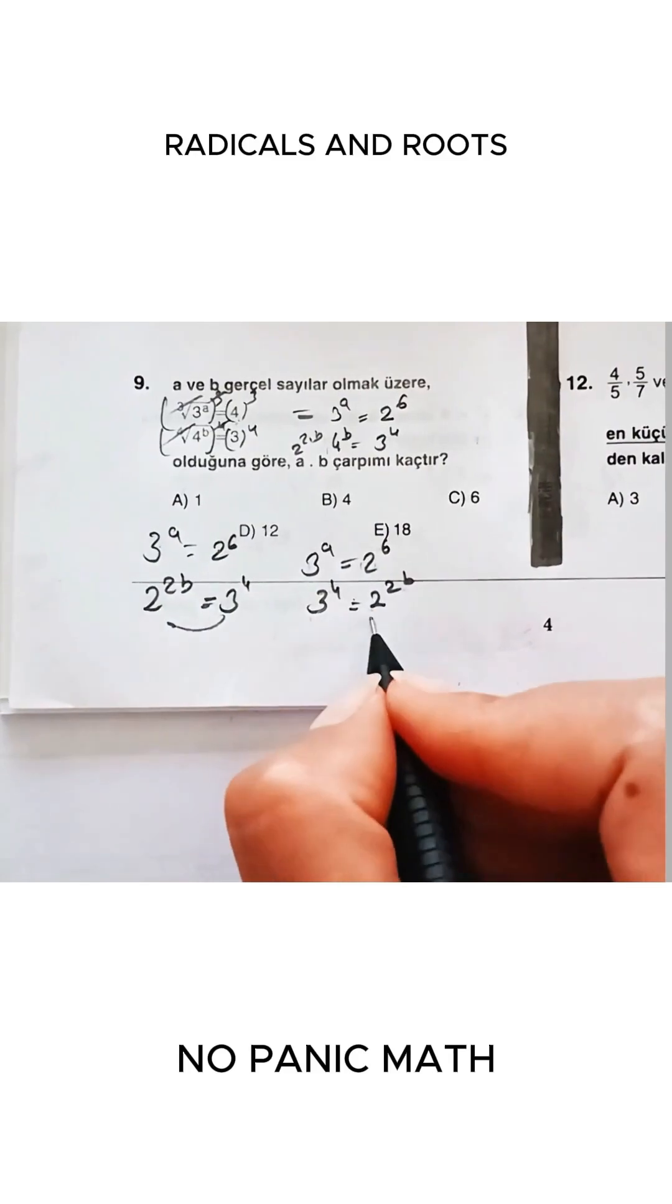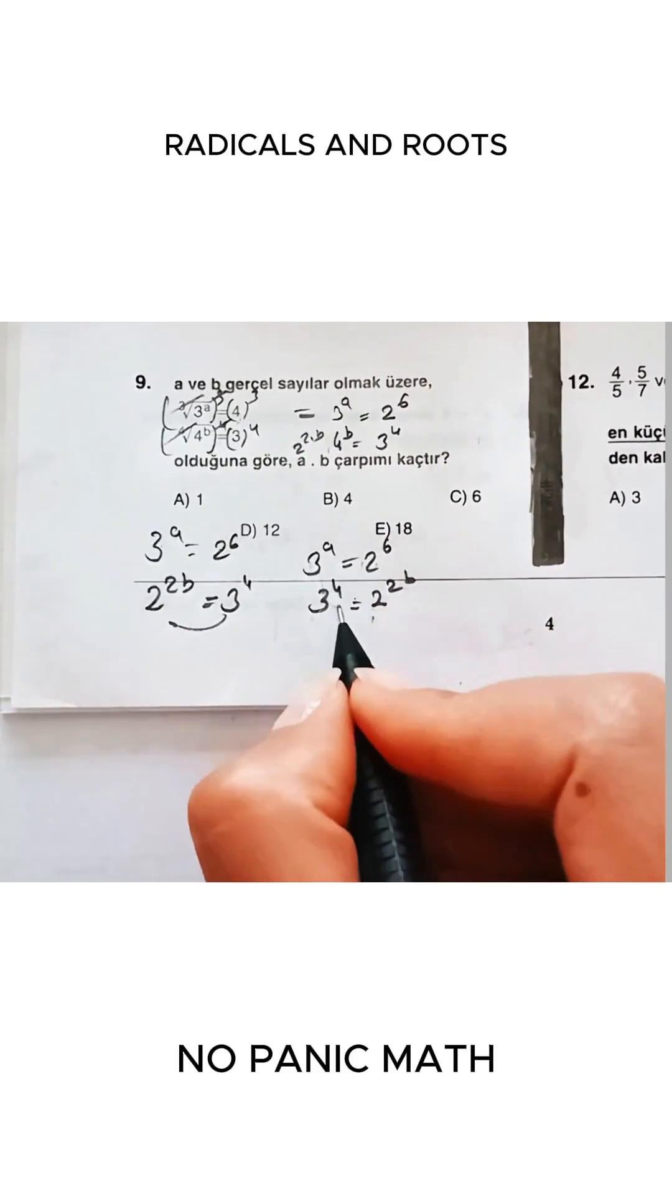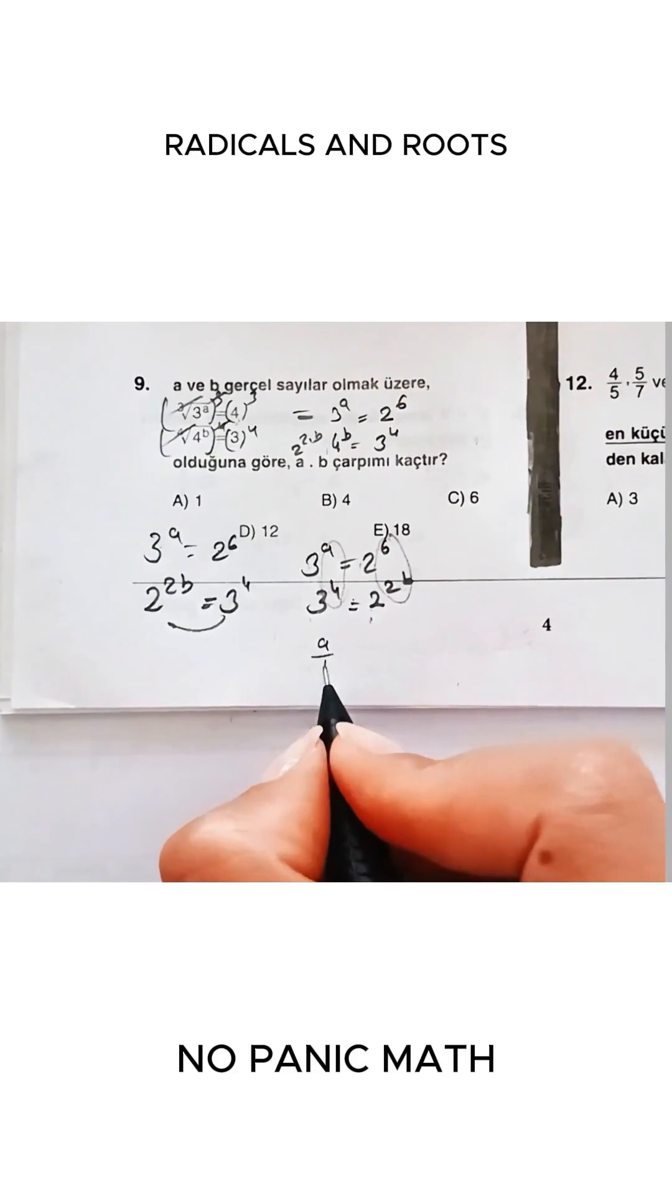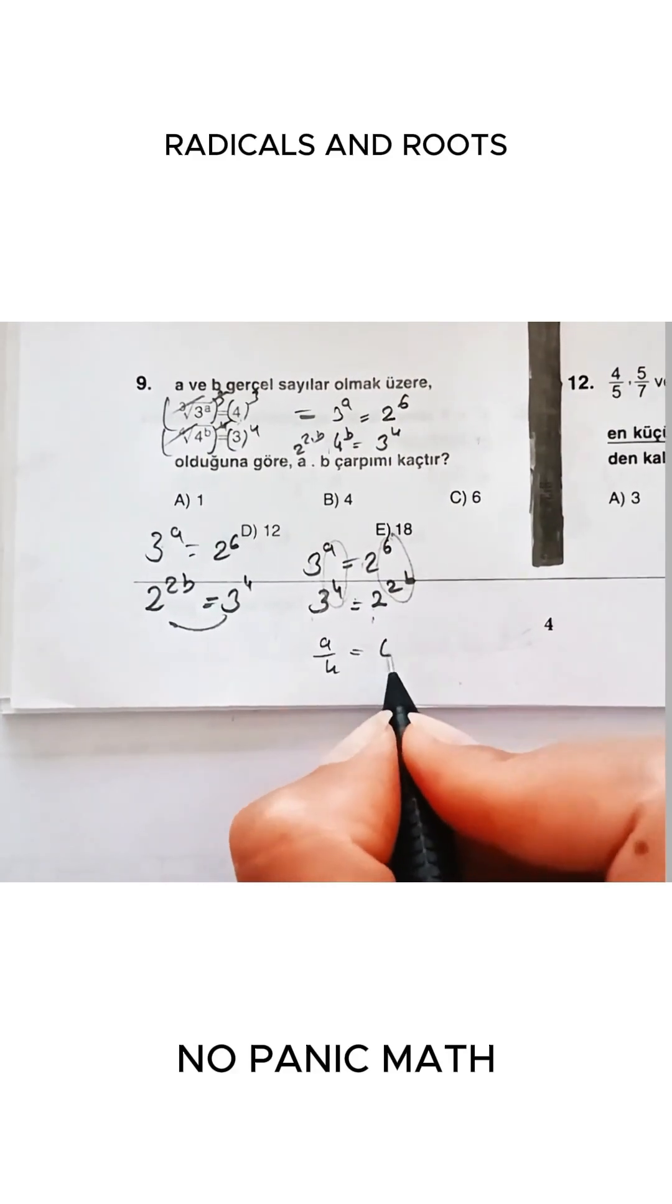Now do you see that the bases are equal here? Good. So in that case, I can compare the exponents here, okay? So a over four equals six over two b.